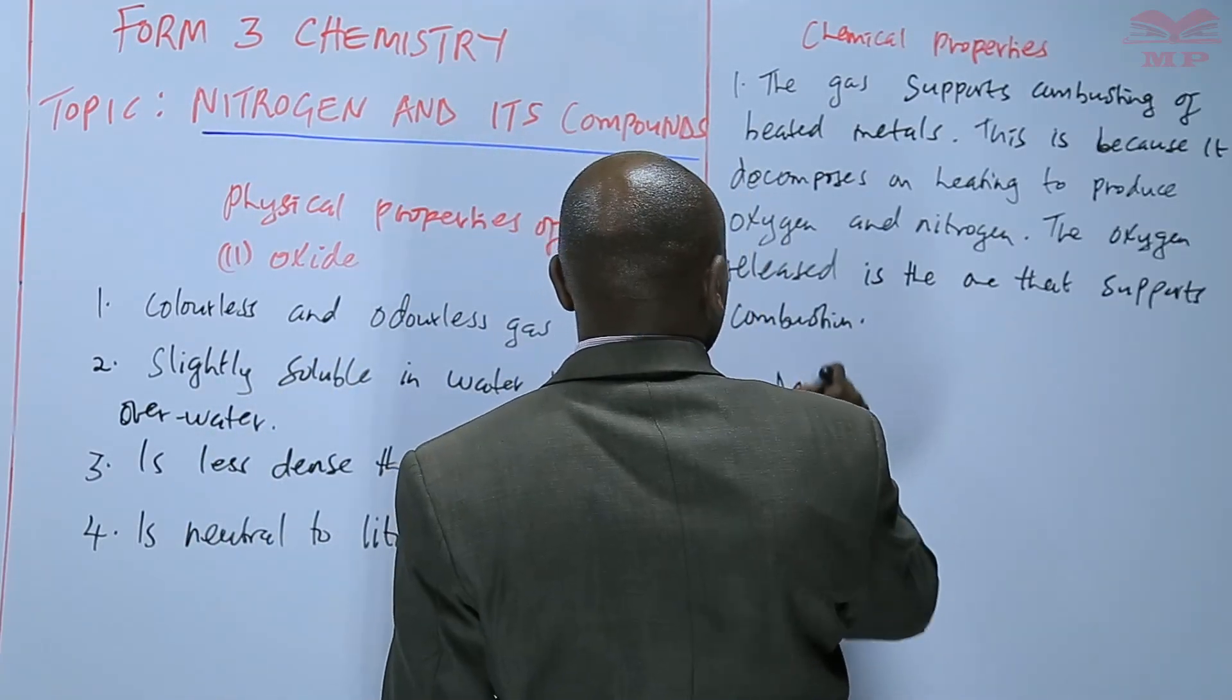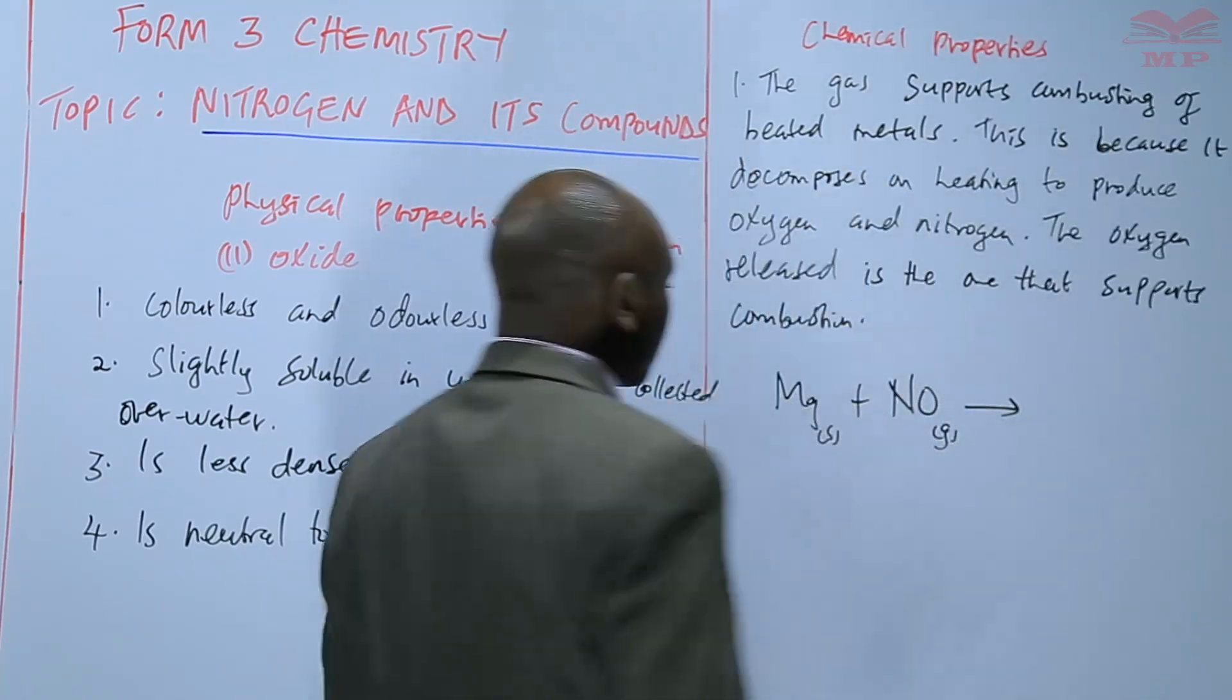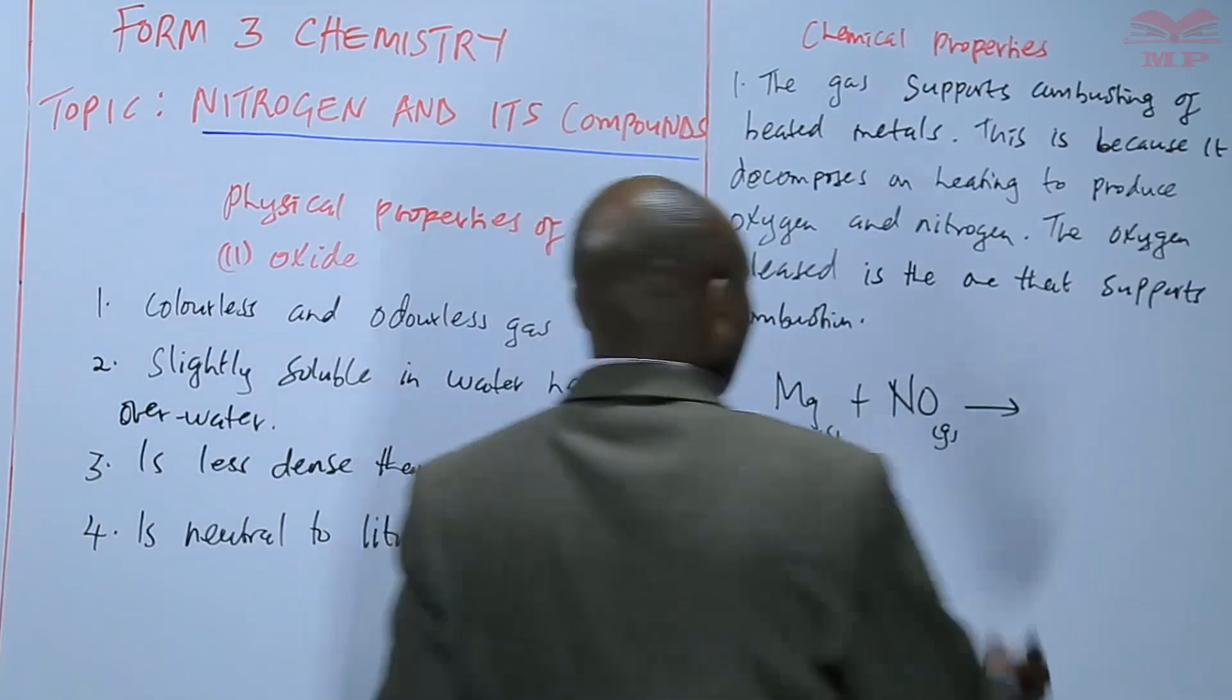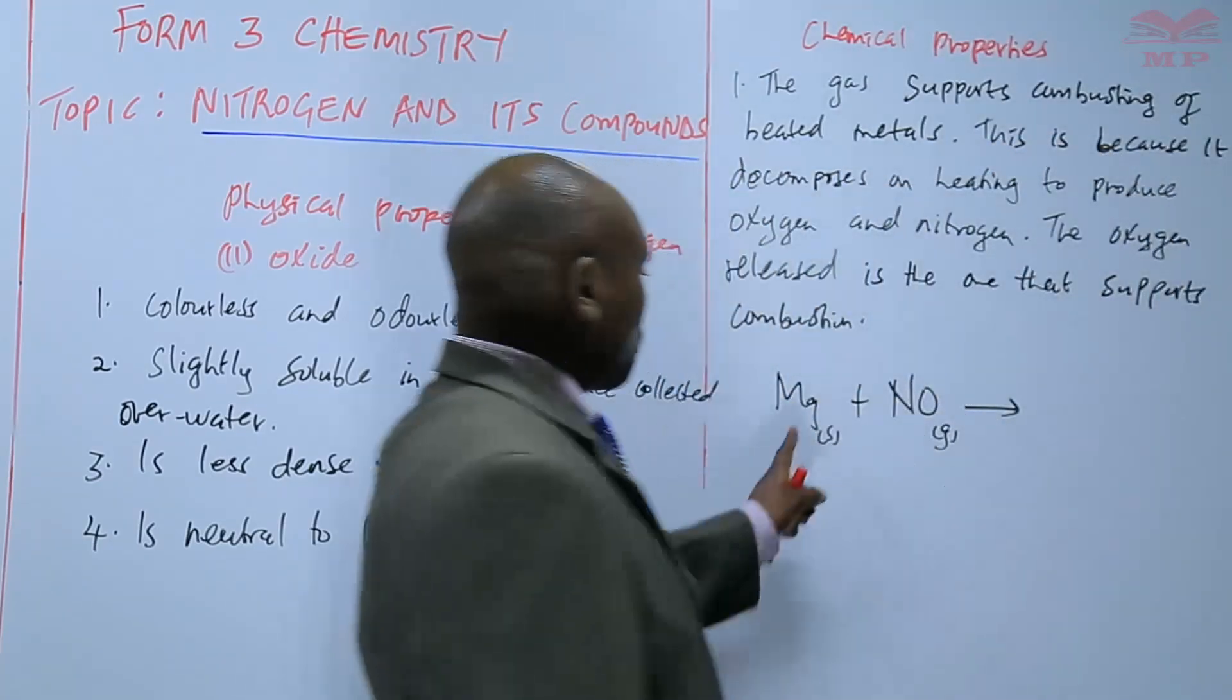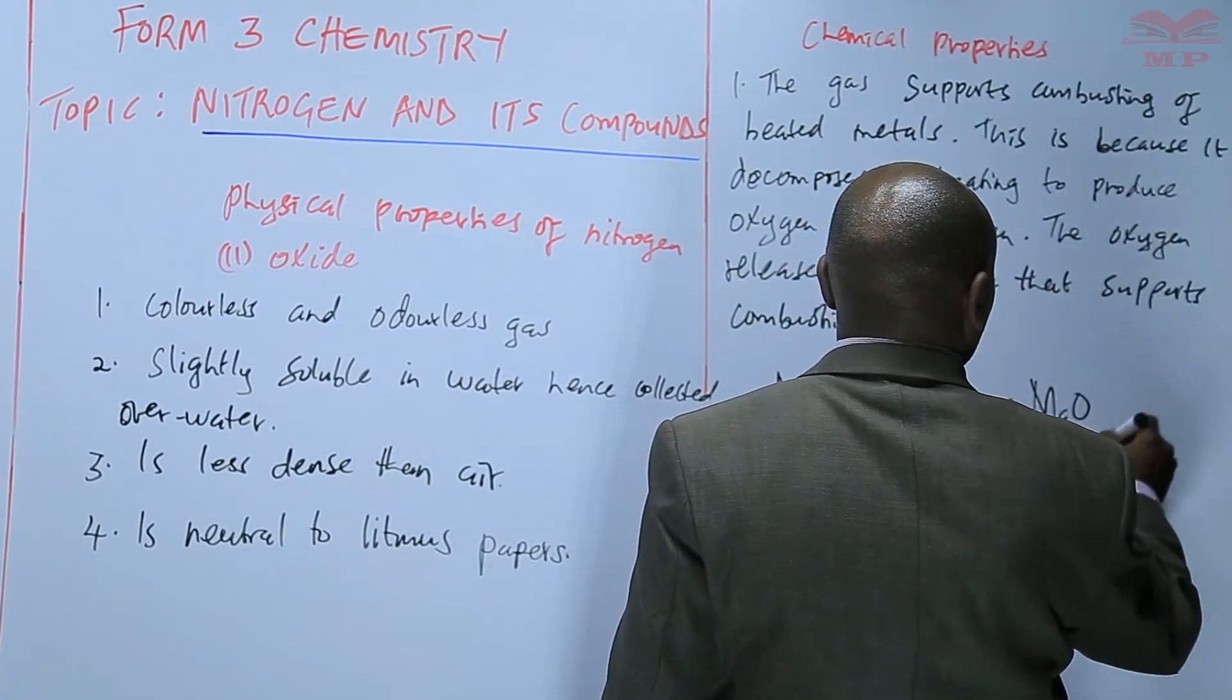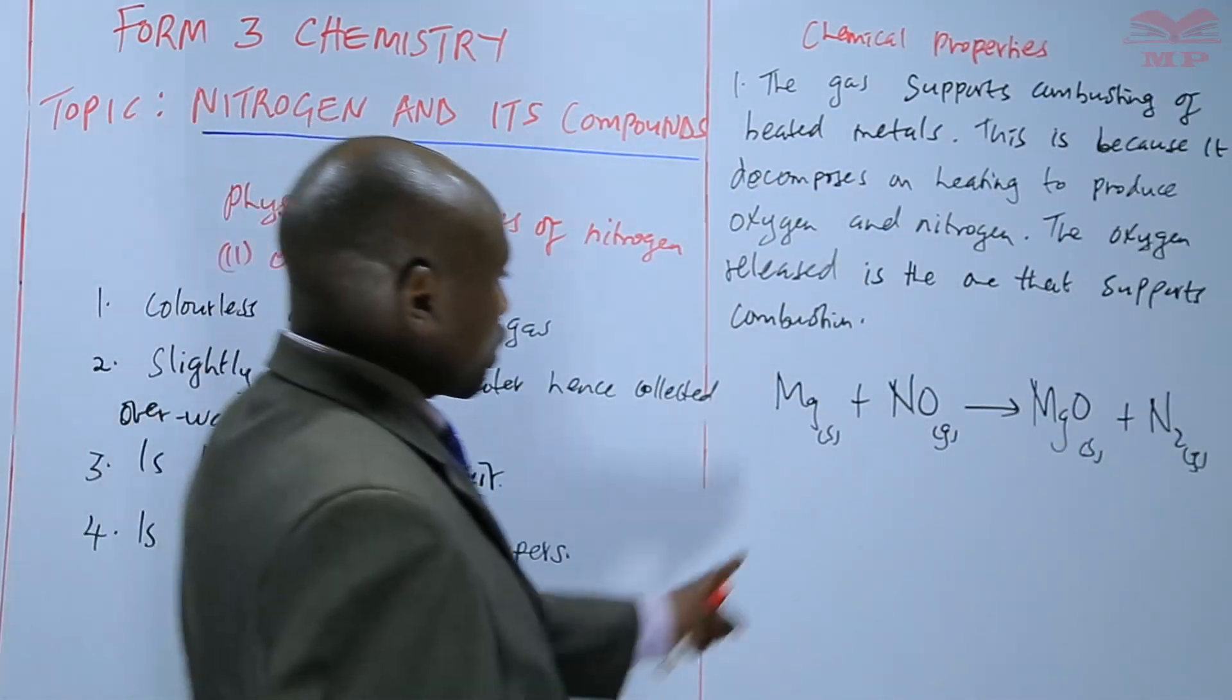We can have an example of magnesium that is burning and passed through nitrogen 2 oxide. Magnesium decomposes nitrogen 2 oxide to nitrogen and oxygen, so the oxygen oxidizes the magnesium to magnesium oxide. That is the reaction.